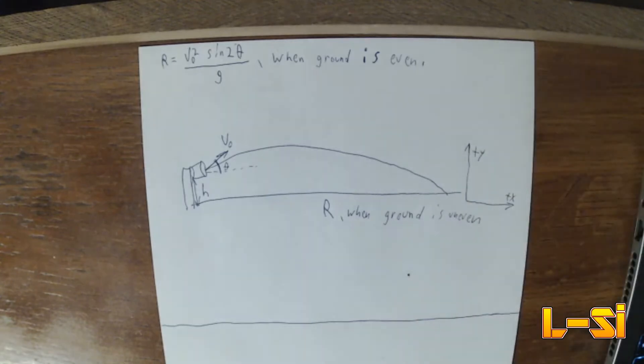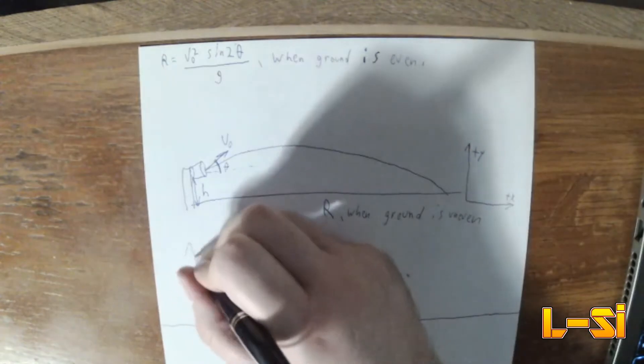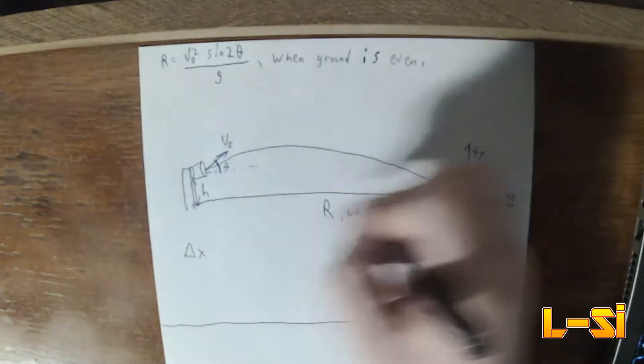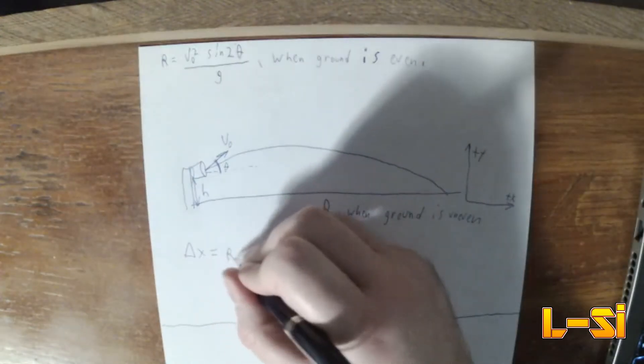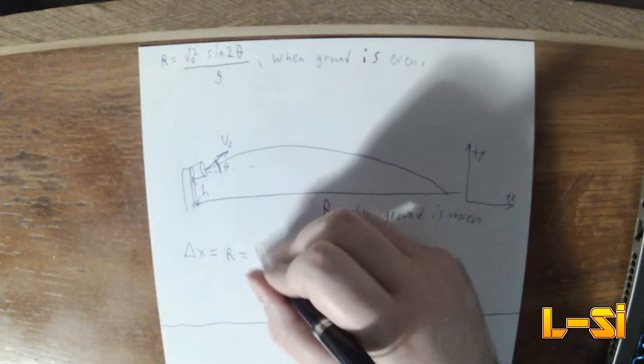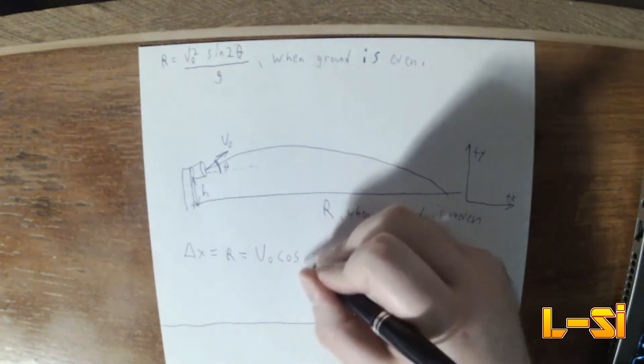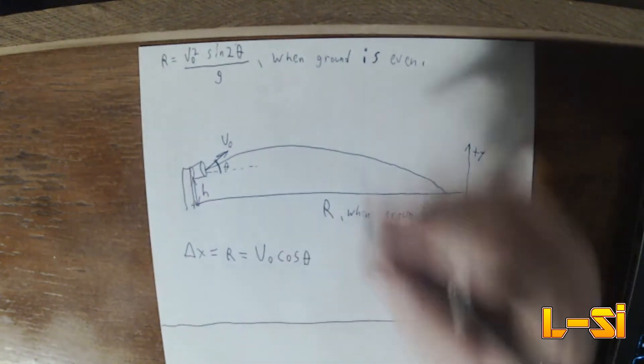What we're going to do is we're going to do what we usually do, where delta X, and this is really the same as R because I defined the range as X, but delta X, which equals R, is going to be your initial velocity times cosine of theta, because that's the X component of your velocity.